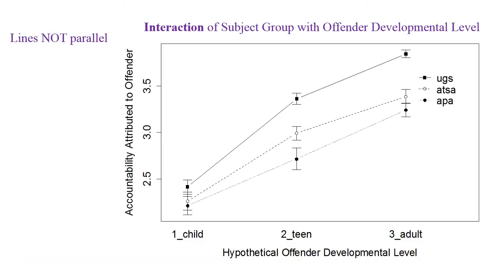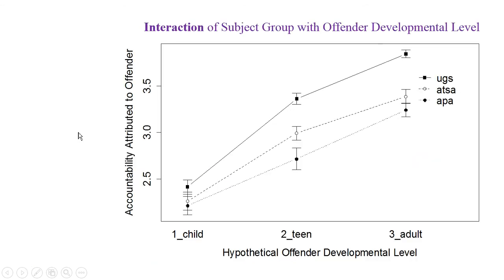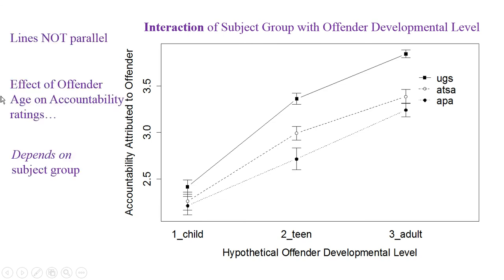Looking at this graph again — the lines are not parallel. The question is, are they non-parallel enough that we trust they represent non-parallel lines in the population? In fact, we get P less than 0.05. It's not a big effect — F of 2.4, probably just barely significant. The lines are mostly parallel. Even with hundreds of participants, these lines are not wildly different from each other.